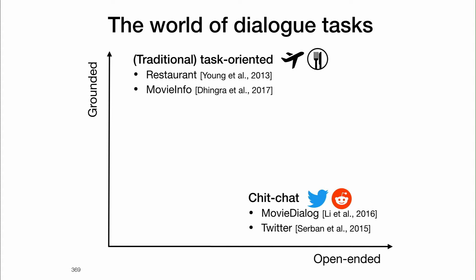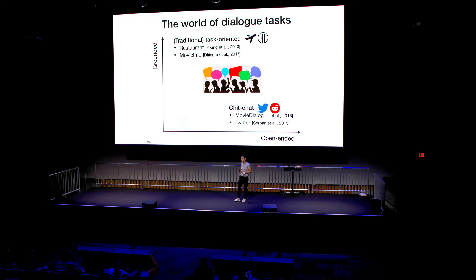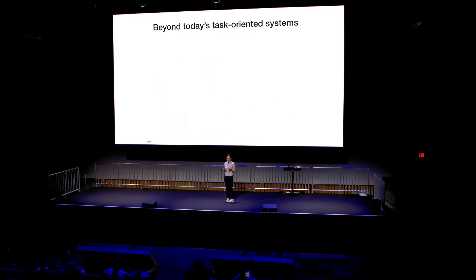On the other hand, we also have chit-chat dialogue, where we can pretty much talk about everything. This allows us to scrape large amounts of data from Twitter or Reddit. But if you think about it, much of human conversation actually happens in between those two modes. We rarely have a conversation without any purpose, and in our goal-directed conversation, not all utterances are directly related to the goal. So what are some desired features if we want to build systems in between those two modes?